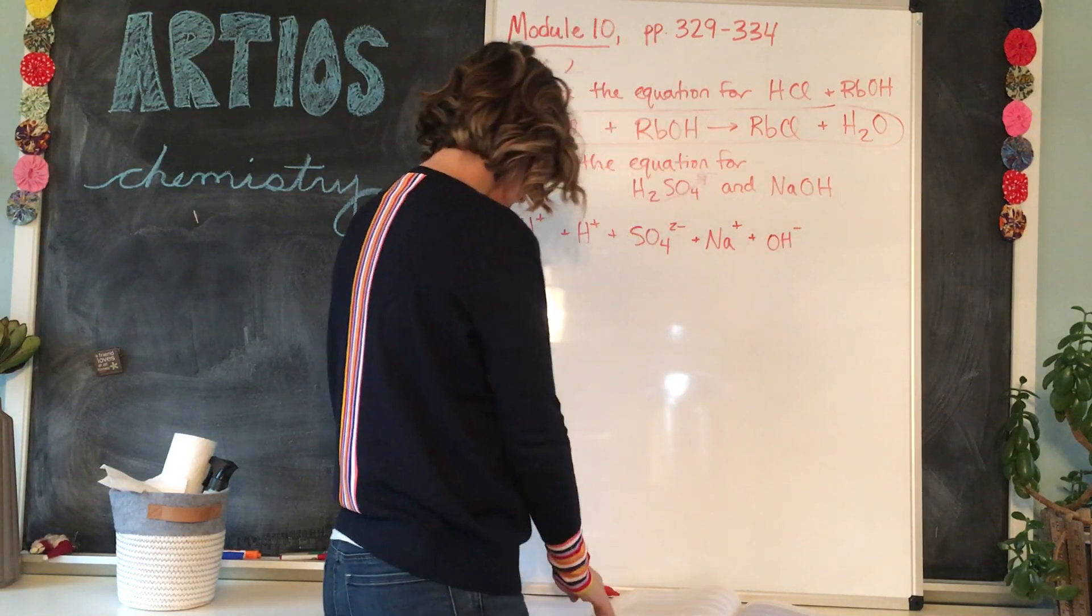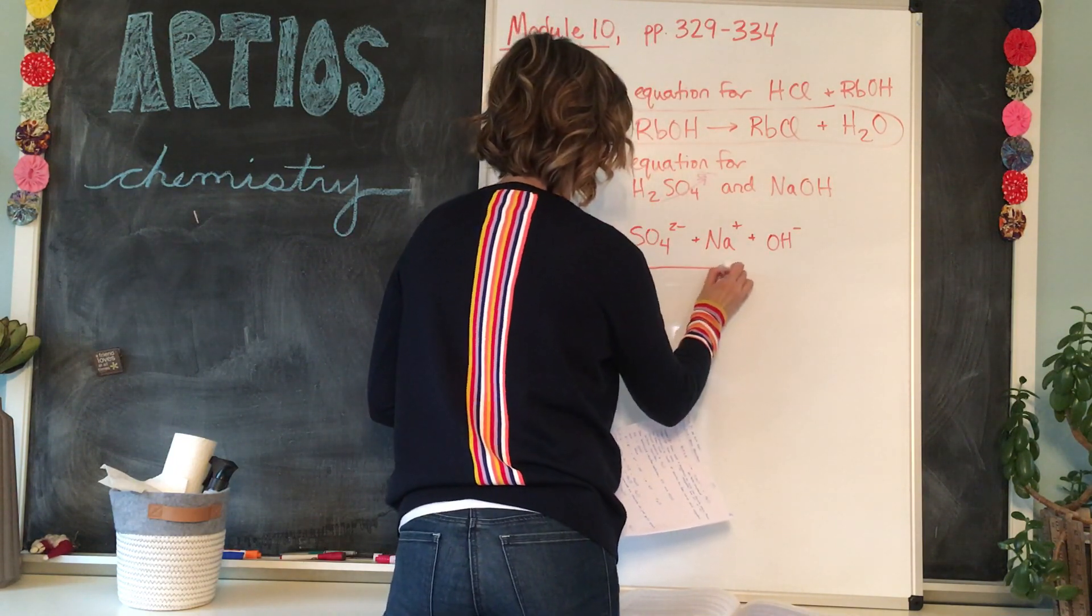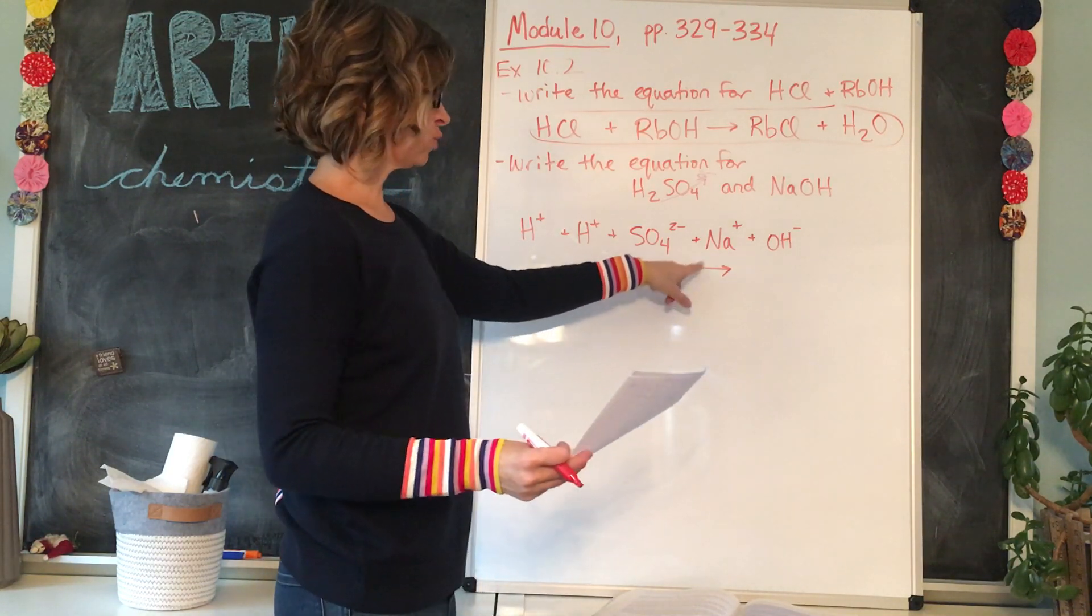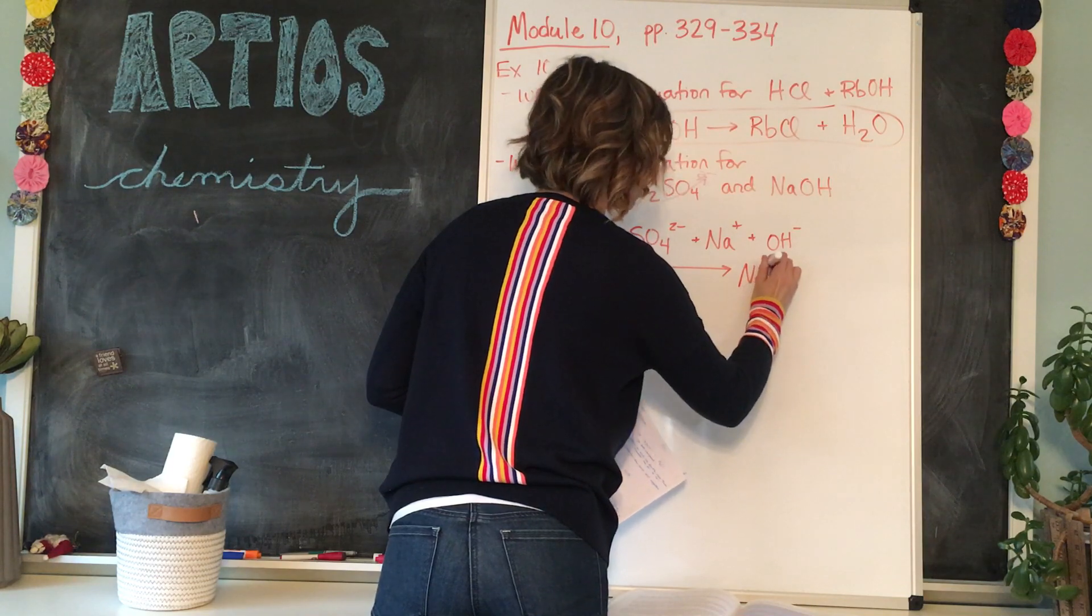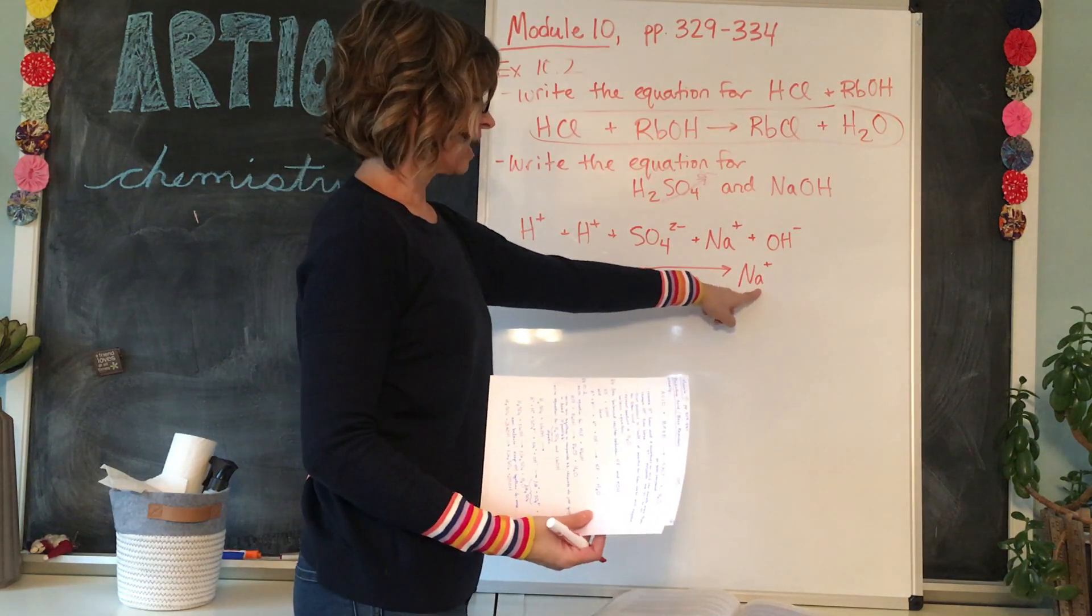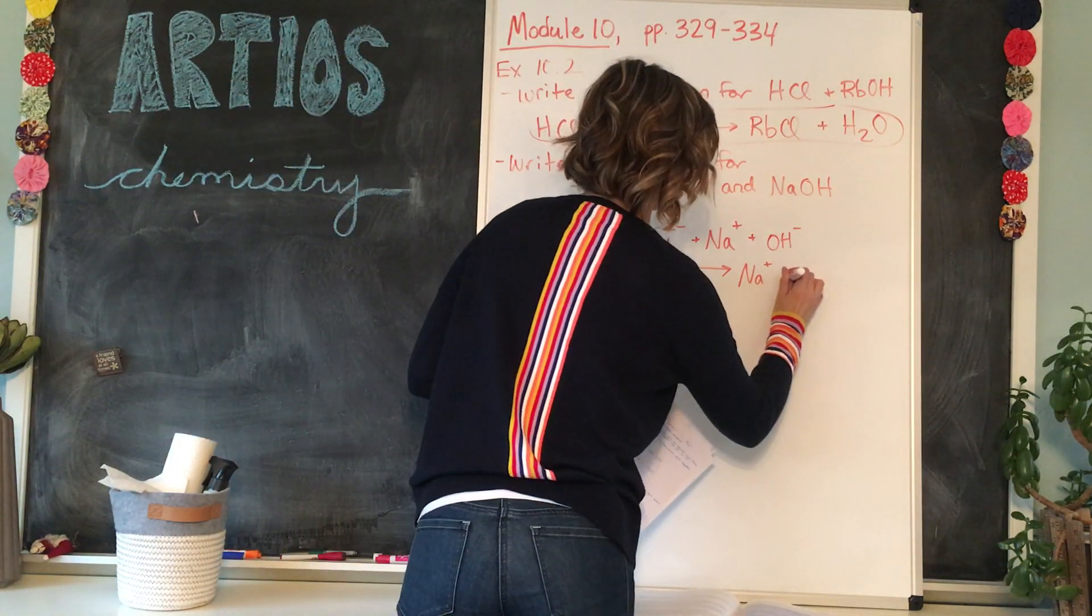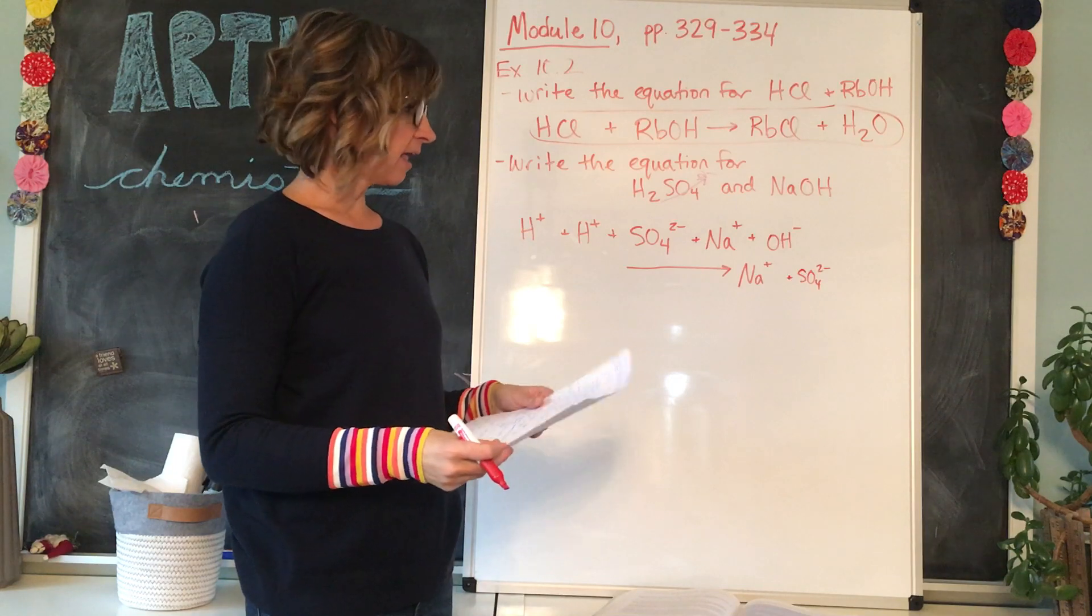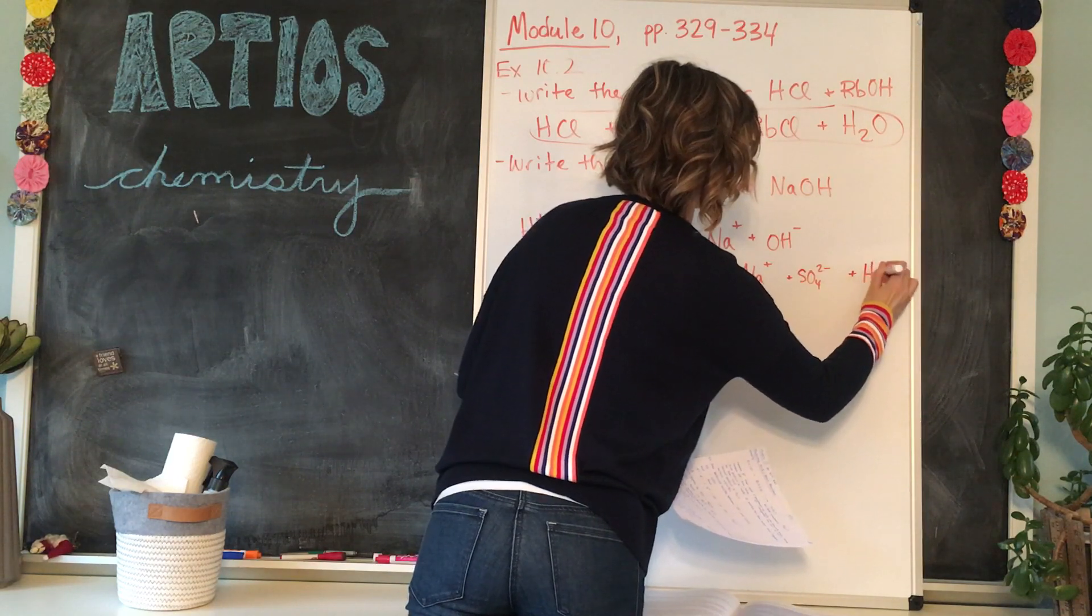And now our products. I'm going to have to draw my arrow under here because I'm starting to run out of room. So our products would be the salt that's formed between the positive ion that came off of the base, which would be Na plus. I'm going to just write it as an ion first, and then we can figure out the formula. So it's formed between this positive ion and the negative ion that came off of the acid, SO4 two minus. That's the salt. And then the second product is always going to be water. We're going to write it this time as HOH.